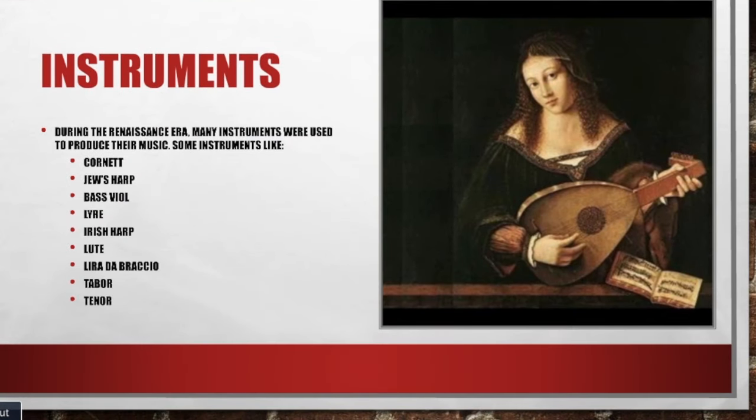Some instruments used during the Renaissance era were the cornet, juice harp, bass viol, lyre, Irish harp, lute, lira de braccio, tabo, and tenor.